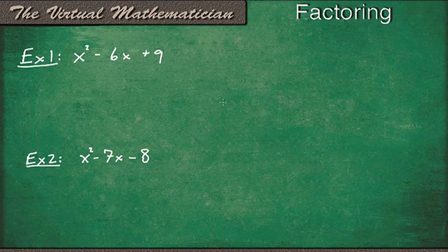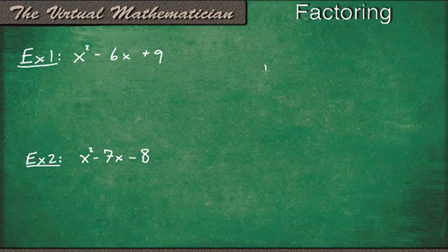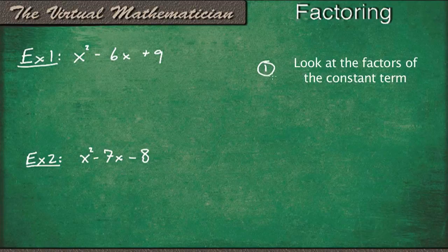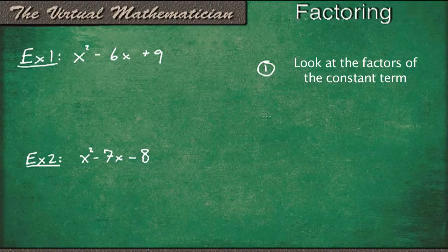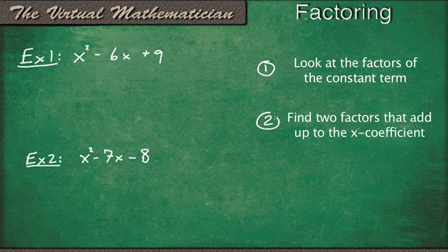So we're still going to use the same strategy as before, the two-step strategy, with the first step being look at the factors of the constant term, and the second step being find two of those factors that add up to be the x coefficient.